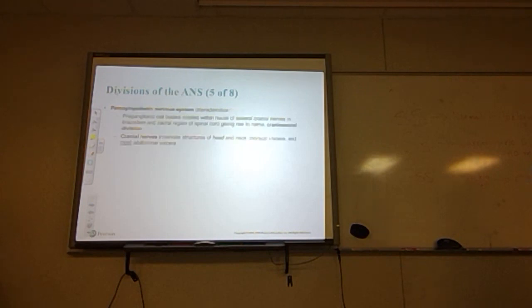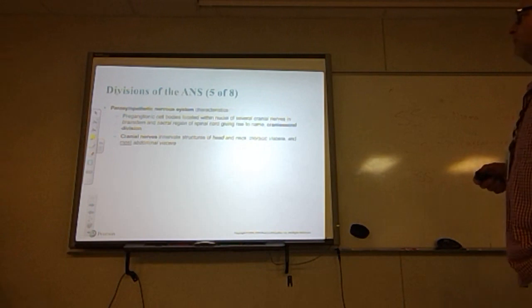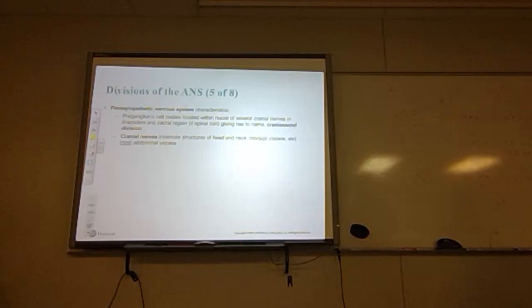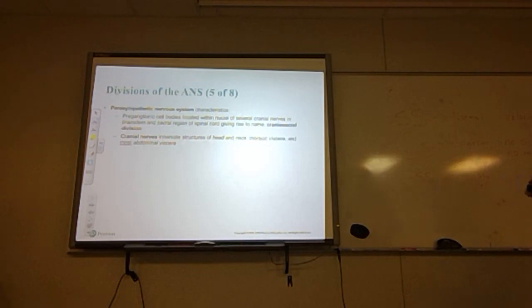The parasympathetic nervous system is sometimes called the resting and digesting system. The pre-ganglionic cell bodies are located within nuclei of several cranial nerves in the brain stem and the sacral region of the spinal cord, giving rise to its name: the craniosacral division. The cranial nerves innervate structures of the head and neck, the thoracic viscera, and most of the abdominal viscera.